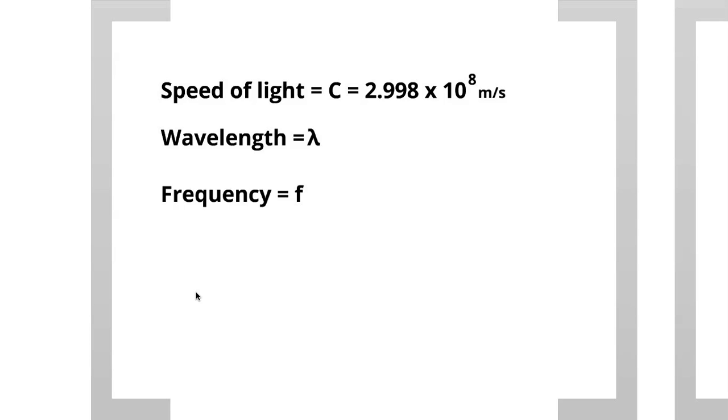Now, the speed of light is a constant, so this is always going to be that value. Wavelength is represented by the Greek letter lambda, which looks like an upside-down Y, and frequency will denote that by the variable F.